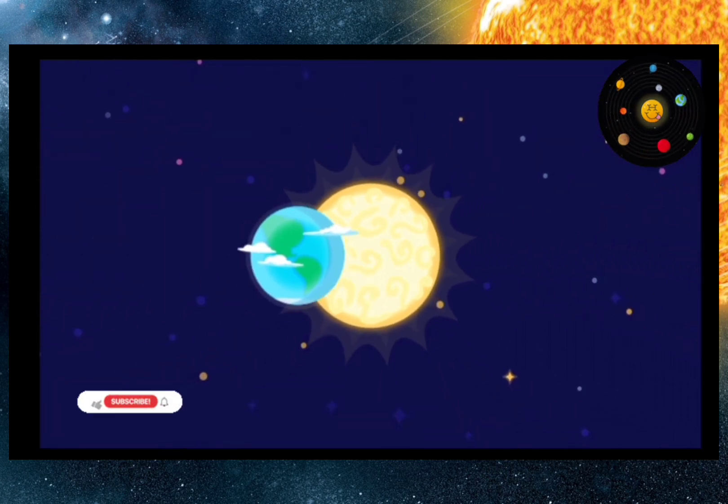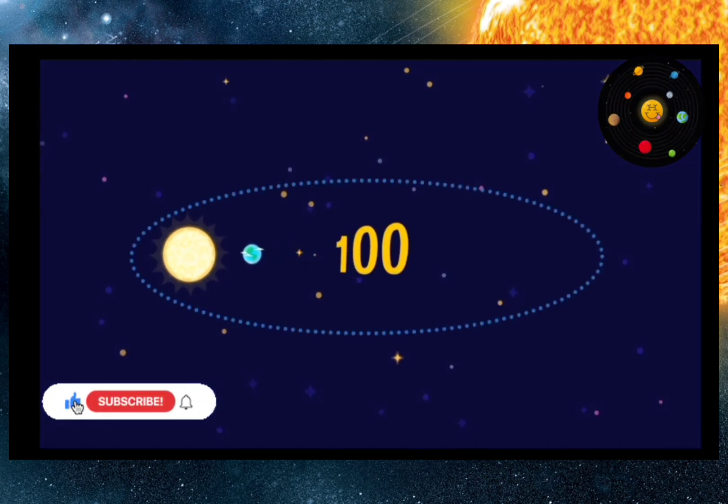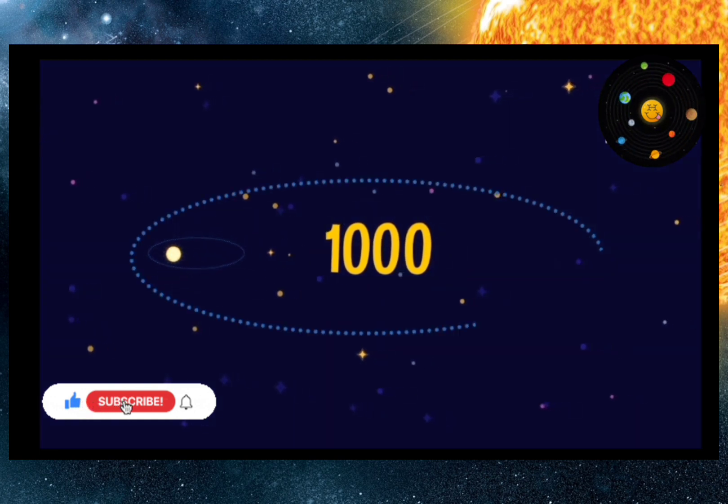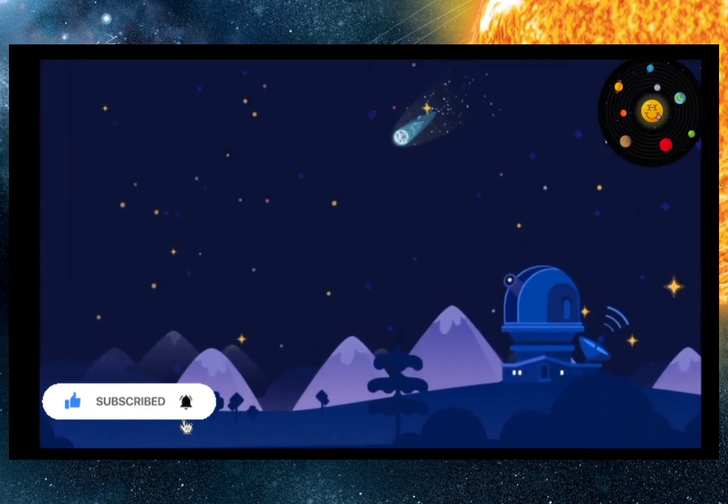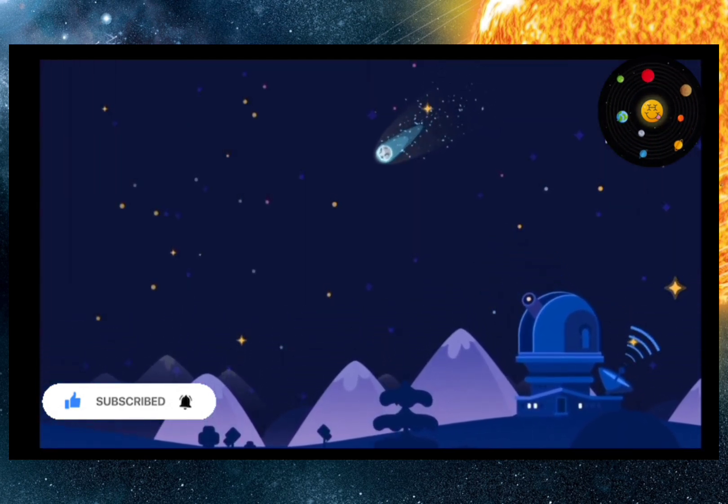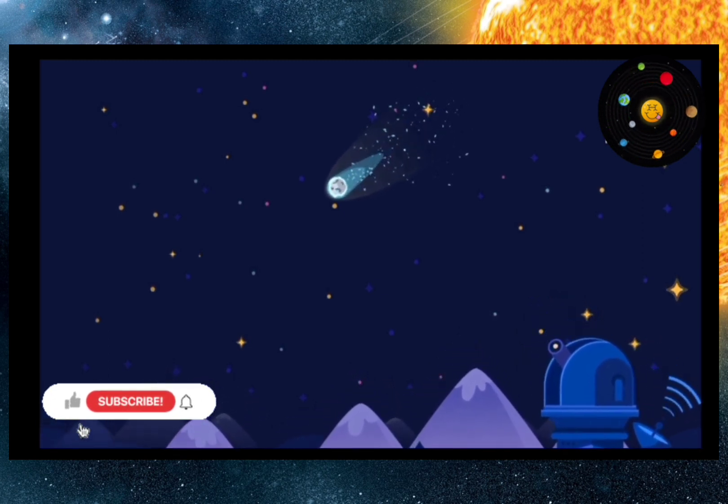Some comets, like planets, orbit the Sun over a period of a few years. But most of them need hundreds, thousands, and even millions of years. For example, the brightest comet of the last century, Hale-Bopp, won't come back to us for 2,000 years.